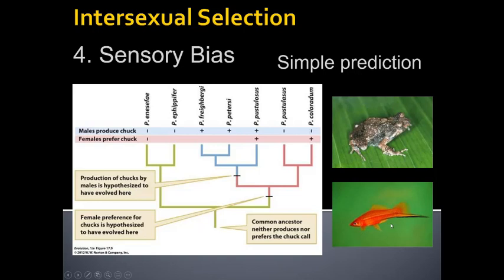There's another example in swordtail fish, sometimes kept in freshwater aquariums, where the preference for the long extended sword evolved anciently, but only in a few species do the males actually possess it. If you artificially give fake swordtails to males in species that don't have them, it's a huge advantage for those males. This demonstrates the random nature of mutations — even if something is beneficial, it won't be selected for unless it first arises by mutation.